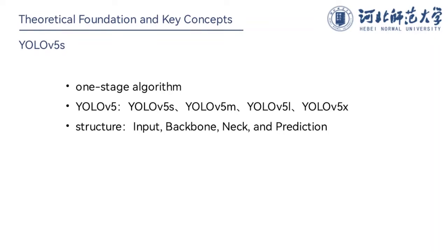All of them have four parts named input, backbone, neck, and prediction. Although they have different names, their backbone, neck, and head are consistent. The only difference is the depth and width settings of the model. We only need to modify these two parameters to adjust the network structure. We choose YOLO-V5S because it has many advantages in hardware deployment, flexibility, and speed.